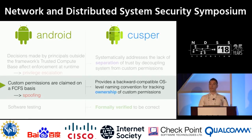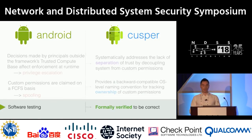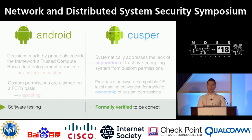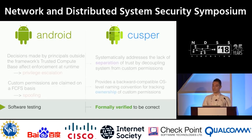Second, currently any application can spoof or claim custom permissions which other applications use to protect their components. Casper introduces an effective naming convention, which is also backward compatible with the existing functionality of the system, and the necessary system extensions to track custom permission ownership. Lastly, the numerous previous vulnerabilities reported by previous works, in addition to the ones we discovered, provide ample evidence that the current software testing methodologies of the permission model are insufficient. So Casper is the first version of the Android runtime permission model that is formally modeled and formally verified to be correct with respect to fundamental security properties.